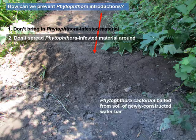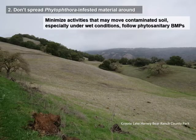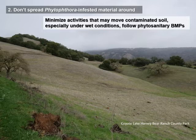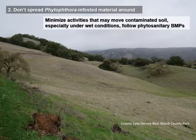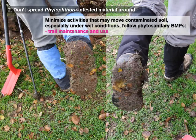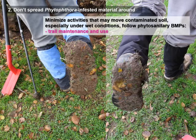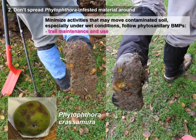Besides having some concept of where you might have contamination, we also want to try to minimize activities when we're more likely to pick up contamination and move it — and that's wet conditions in particular. We happened to be here right after it rained and had to move down the trail; it was pretty heavily mucked up by cattle activity. We picked up mud on our shoes, stopped to clear it off, decided to bait that, and it turned out we could bait Phytophthora crasimura off of that mud collected from these boot soles.